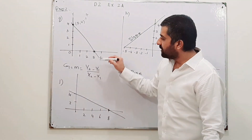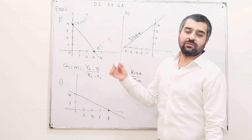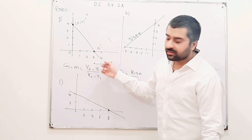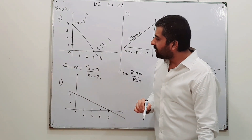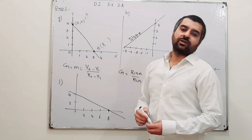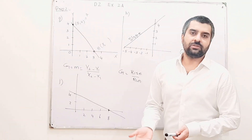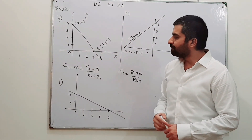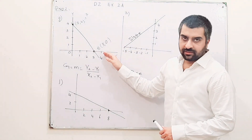This is the second point — name it as D. The coordinates of this point: the value of x is 3. The value of y will be 0, because we are on the x-axis. So here the value for y is 0, because we are on the x-axis.